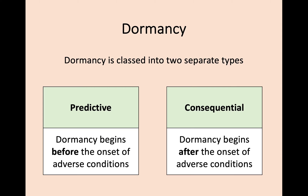Before we go into the three different forms of dormancy, there are two types it can first be divided into, and you need to know the difference between both. The first is predictive dormancy, which begins before the onset of adverse conditions — before it gets too cold or before there's not enough food. Consequential dormancy, however, begins after the onset of these adverse conditions, so an organism using consequential dormancy would wait until conditions are already bad before going into dormancy.